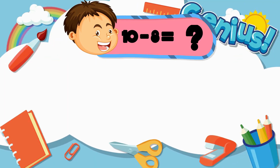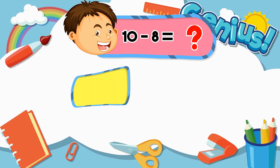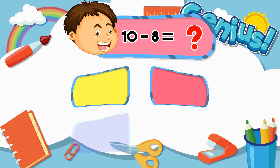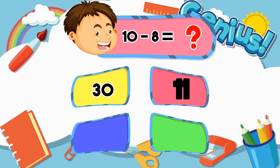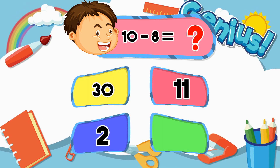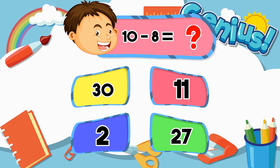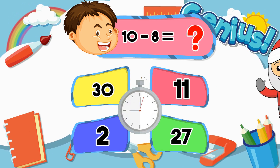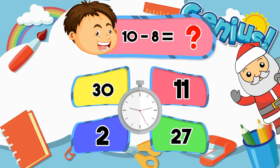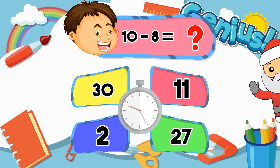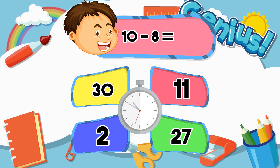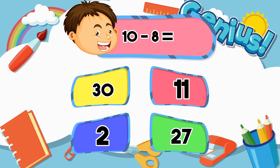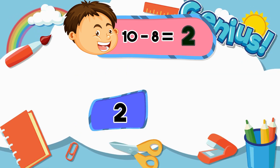What is 10 minus 8? 30, 11, 2, 27. The answer is 2.